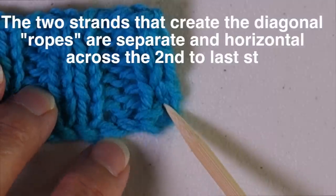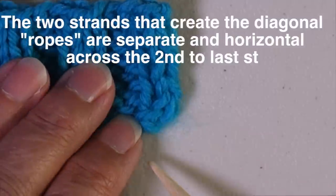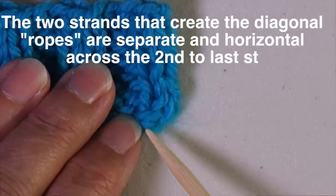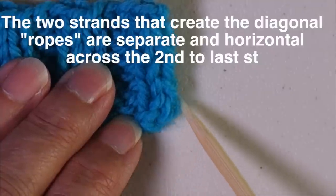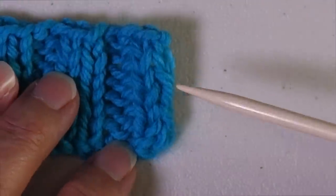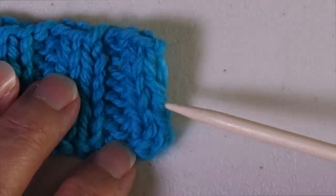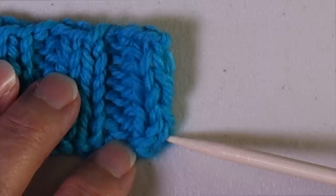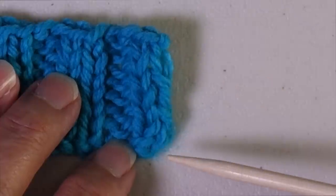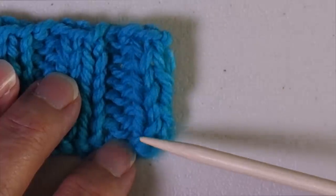You can see how these have these kind of rope-looking, diagonal-looking things. And here, you'll see two strands coming across and the corner curves around. In addition, this edge column is a row shorter, has fewer rows in it than this second stitch.